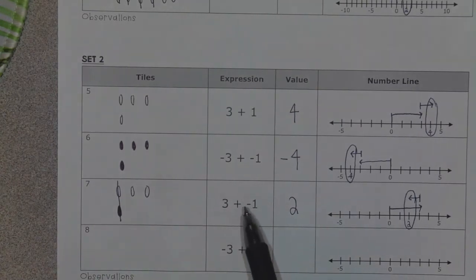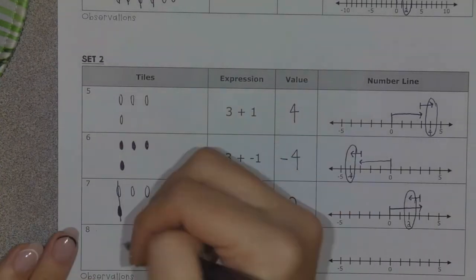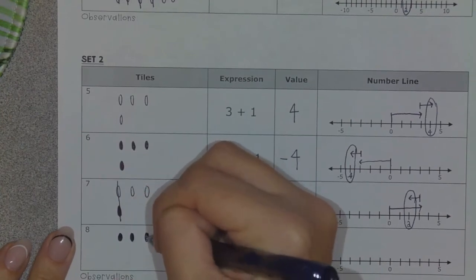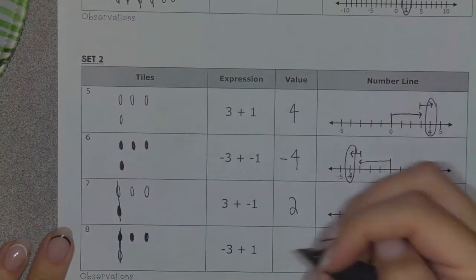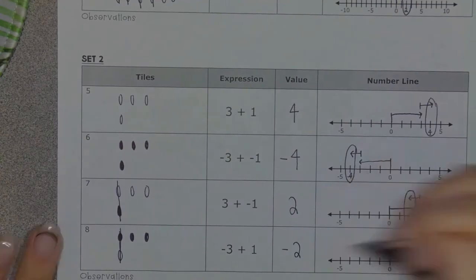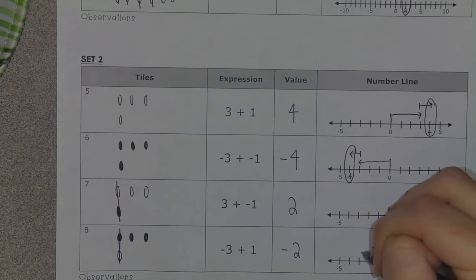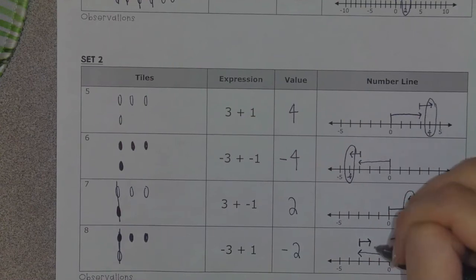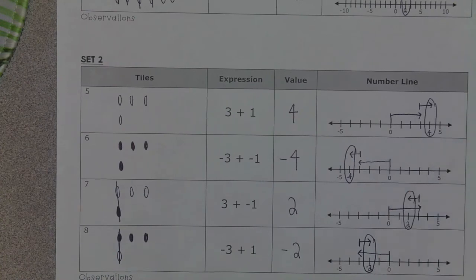So how did I go from numbers three and one — adding them — and end up with two? My next one says negative three plus one: three shaded circles and then positive one. Again, I'm going to create my zero pairs — one positive, one negative — and I'm left with a value of negative two. I'm going to start at zero, move to the left three spaces since I have three negatives, then move to the right one space for one positive. Wherever it lands is my value — so I have a value of negative two.